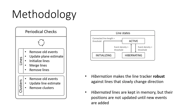The main contribution of this work is to add hibernation to the line tracker. Hibernation is introduced to make the line tracker robust against lines that slowly change direction, which happens during slow direction changes of the robot in power line tracking on board a quadrotor. Lines are hibernated when the event density is lower than a given threshold. Hibernated lines are kept in memory, but their positions are not updated until new events are added, improving the persistency of the line tracker.